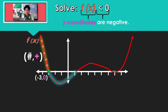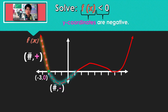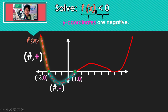Then all along there, the y part of the coordinates of those points is going to be negative, and we are looking for y-coordinates that are negative. So that means we are going to use that section. Back to the x-intercept — I plug in 1 and I get out 0, and we're only looking for negative, so I do not want to use 1.